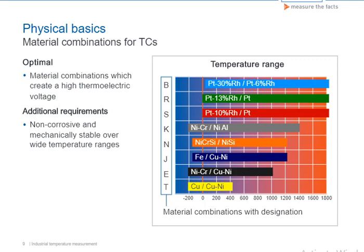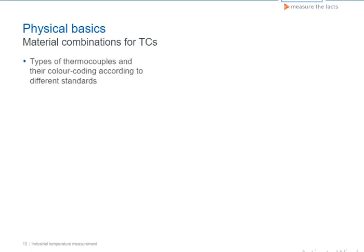For example, the platinum-rhodium alloy with 30% rhodium and platinum-rhodium alloy with 6% rhodium is a suitable combination in the temperature range of 0 to 1,800 degrees Celsius. This material combination is generally given the material designation type B, and we speak of a thermocouple type B. Other frequently used thermocouples are types K and J. Color and letter recognition for thermocouples was introduced to enable the simple identification of the different types of thermocouple in practice.